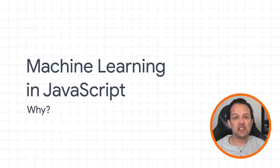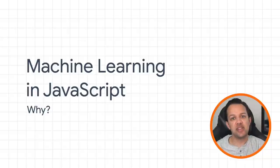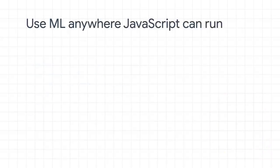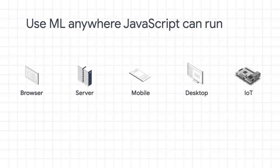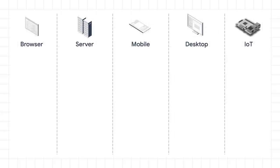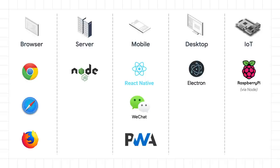The first question you might ask yourself is why would you want to do machine learning in JavaScript in the first place? JavaScript has many unique selling points to consider here. First, JavaScript enables you to do machine learning anywhere that JavaScript can run, and that includes the browser, server-side, desktop, mobile, and even Internet of Things-based devices. And if we dive into each one of these stacks in more detail, you can see many of the technologies we know and love.